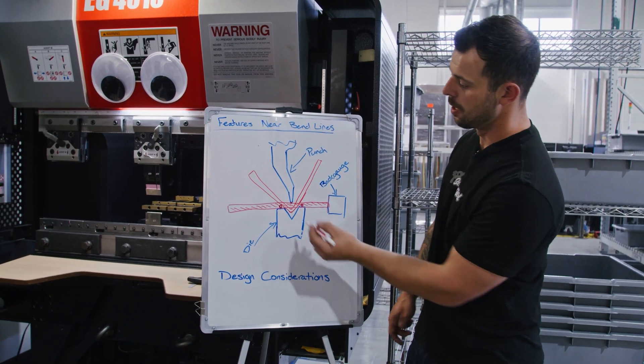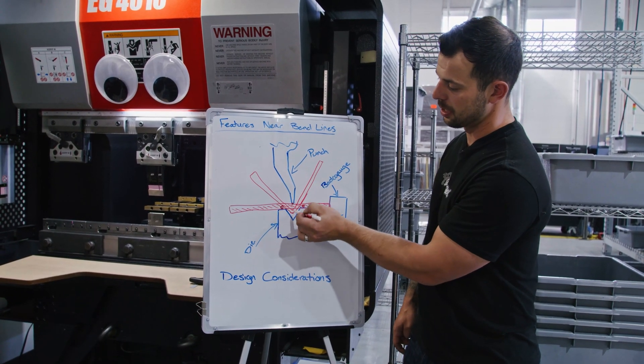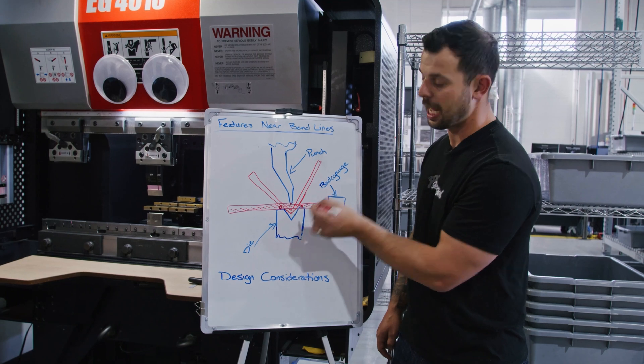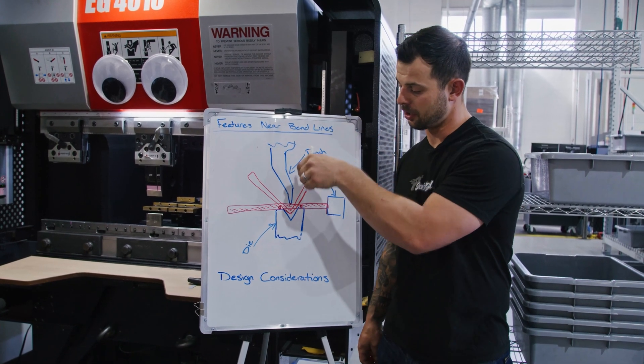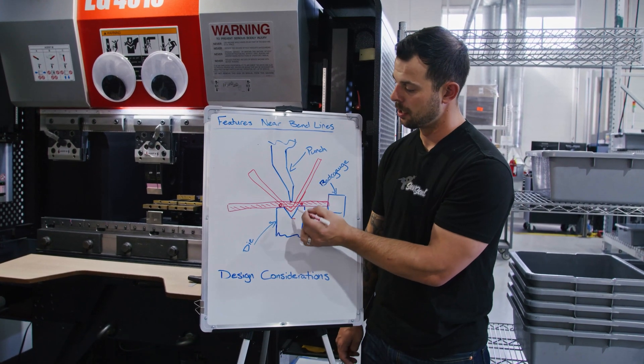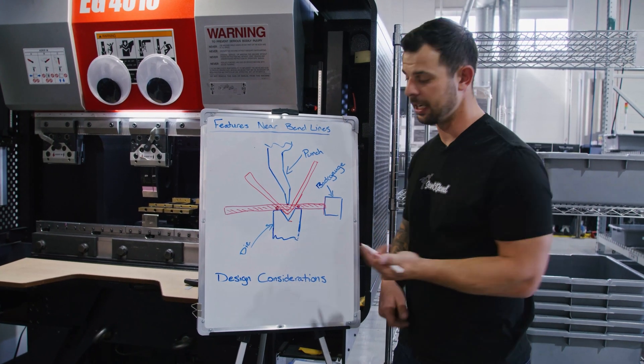Sorry for the terrible drawing there. So as that punch comes down and forces it in there, it's not going to actually push that material all the way down to the bottom of the die. Here at Senkosan, we don't do coining.